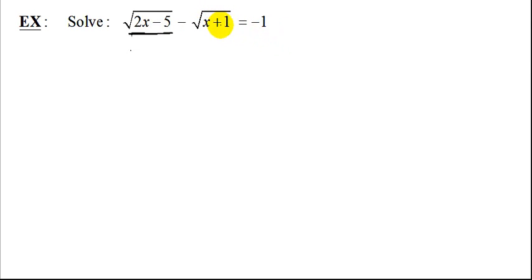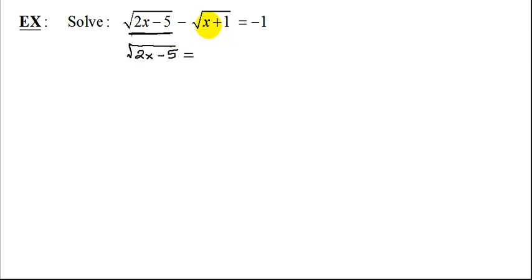The problem could be worked equally easily if I isolated the other term too. So we're going to have the square root of 2x minus 5 equals — adding the square root to both sides — negative 1 plus the square root of x plus 1.